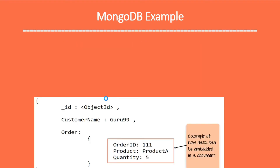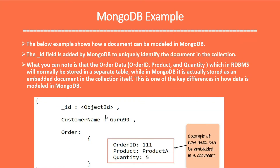Let's see a simple example of MongoDB. This shows how a document can be modeled in MongoDB. The underscore id field is added by MongoDB to uniquely identify the document in the collection. When there are multiple documents in a collection, MongoDB uses this underscore id field to uniquely identify each document — it is essentially the primary key for the document.